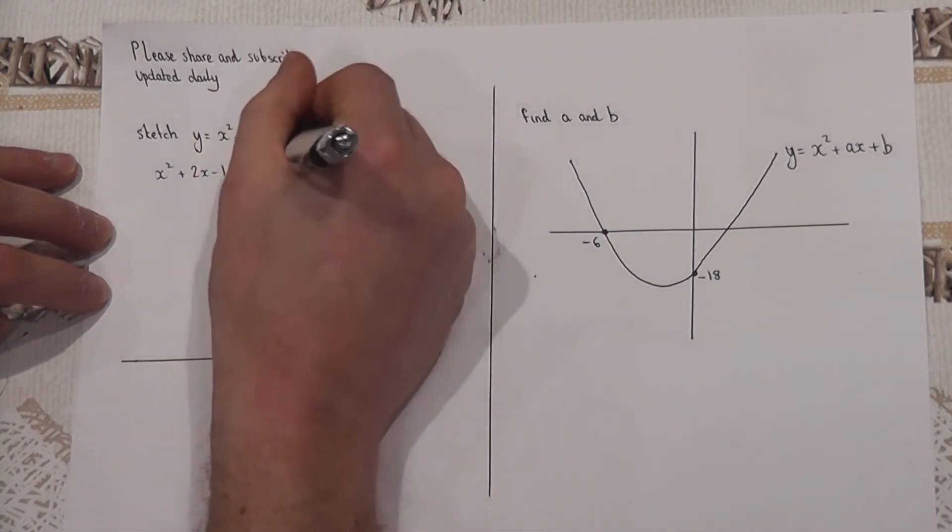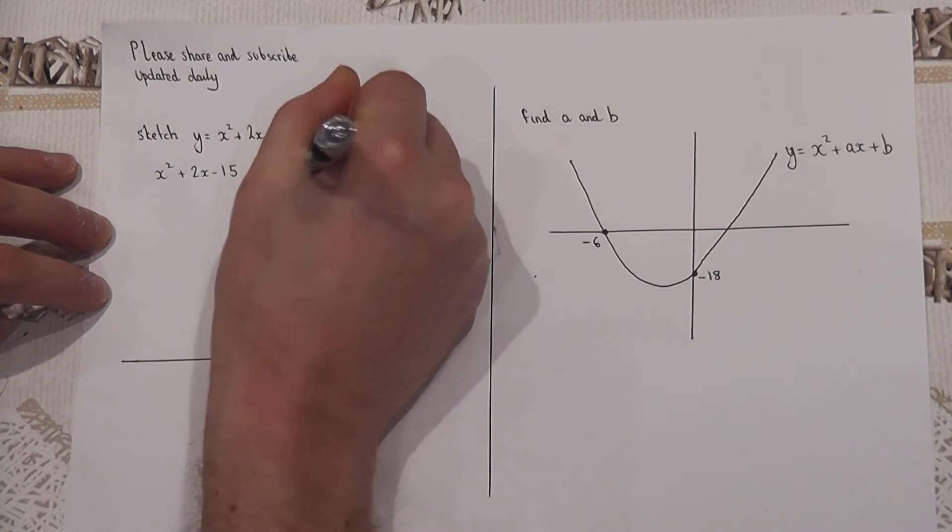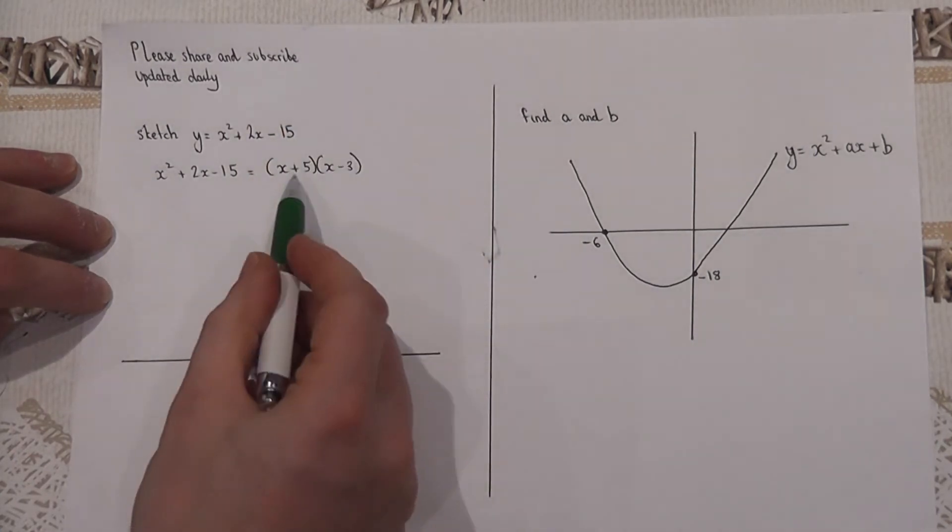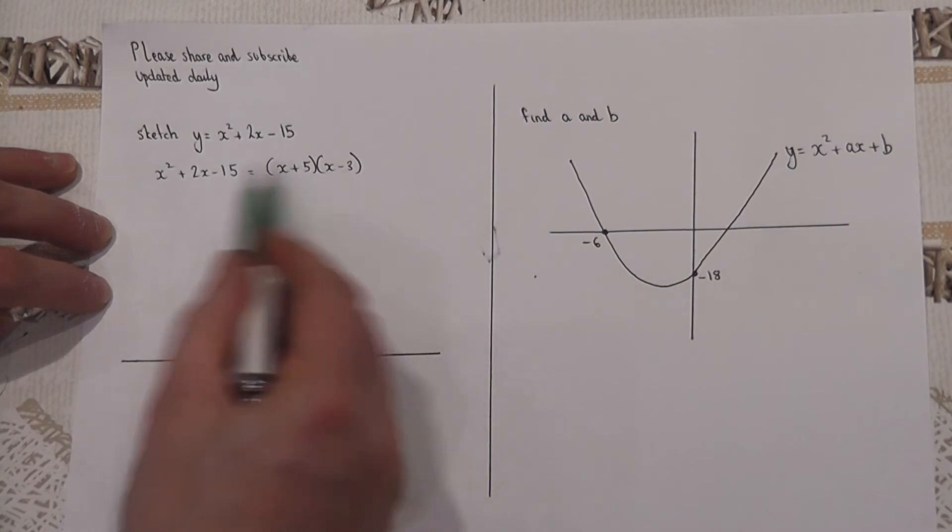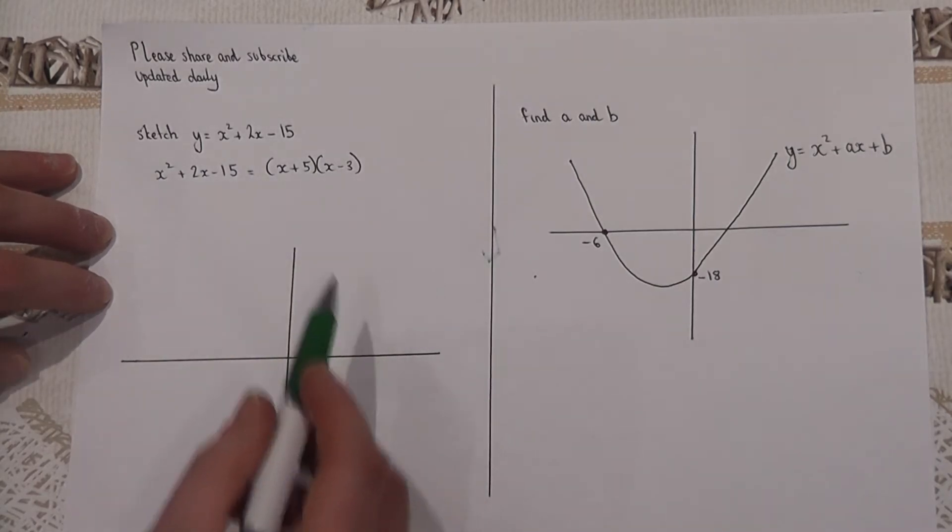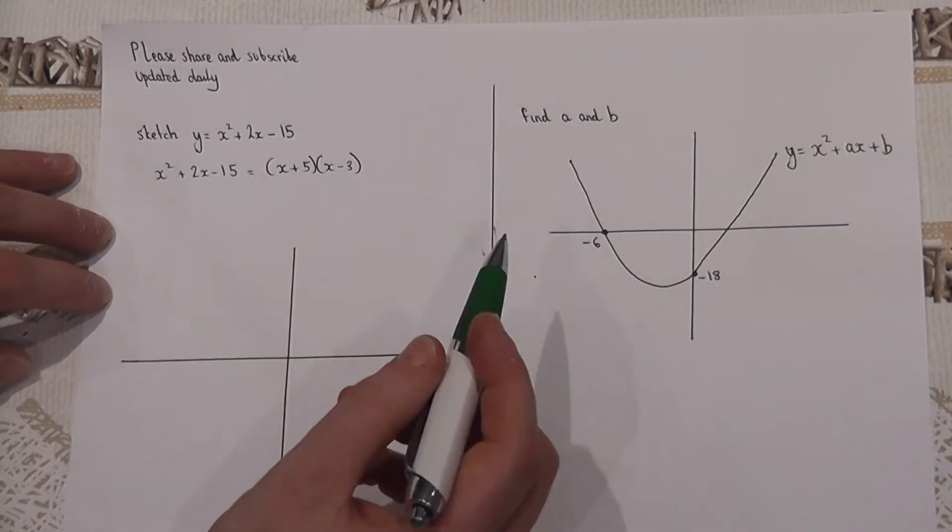So if I'm to put x plus 5 and x minus 3, that plus 5 take away 3 is positive 2, and 5 times by minus 3 is minus 15. So these are called the factors.